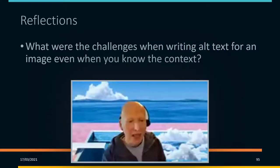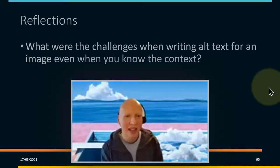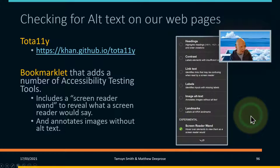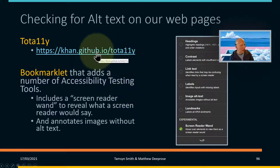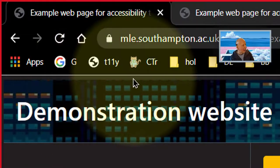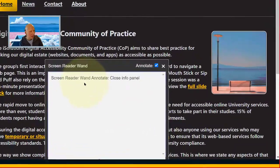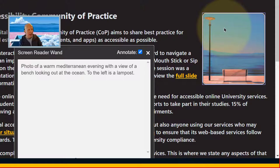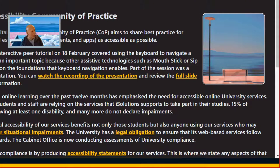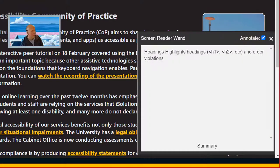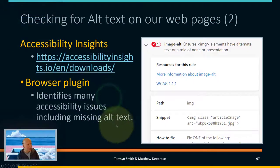You might also notice one of the images is a meme — hidden in the slide deck there are a couple of slides about writing alt text for memes. For checking images, here's a quick demo: there's a bookmarklet called Tota11y. Once you've dragged it into your bookmarks bar, you can click the little sunglasses icon. Among its features there's a screen reader wand, and as you hover over something it shows you what a screen reader would say. Where there is no alt text, you can see it says 'no text visible.'